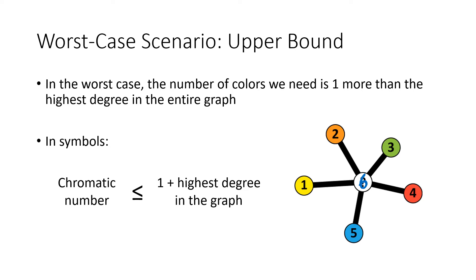So symbolically, I can write this as an inequality, where this symbol means less than or equal to. The chromatic number — remember that just means the number of colors we need for our graph — the chromatic number could be equal to one plus the highest degree in the graph if we get to this worst case scenario. And in general it could be less than that, but it couldn't ever be bigger. It can't be greater than that because one plus the highest degree is the worst case scenario. So it could be equal if we get that worst case scenario, but in general it'll be less than.